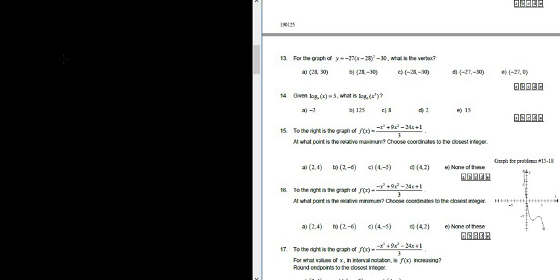Number 13. For the graph of y equals negative 27 times (x minus 28) squared minus 30, what is the vertex?